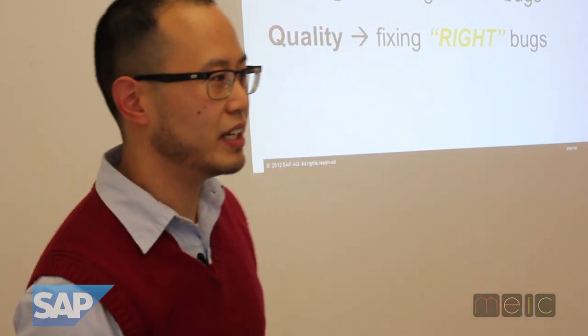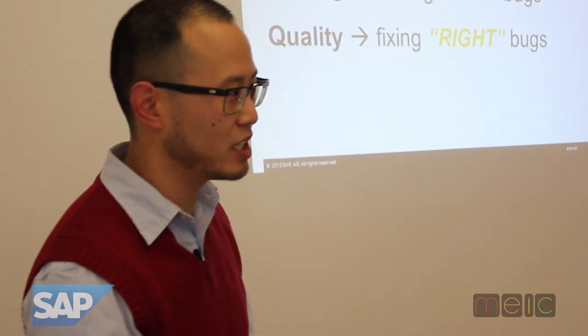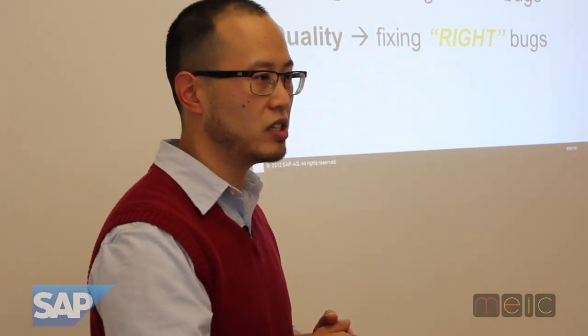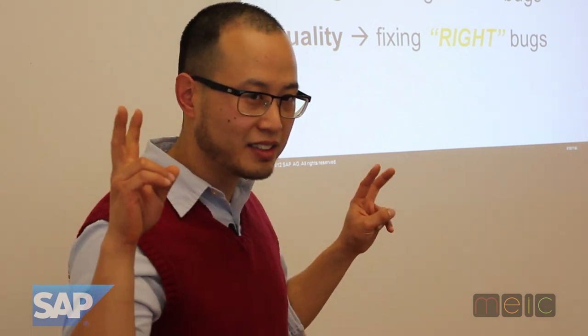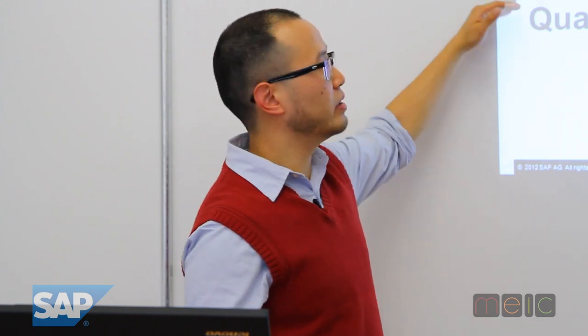Quality, on the other hand, is about fixing the right bugs. People use these terms interchangeably — quality and testing, quality assurance, quality experts. QB is actually one of the terms SAP uses for their testers. But the real goal is about fixing things. Quality comes from fixing things.